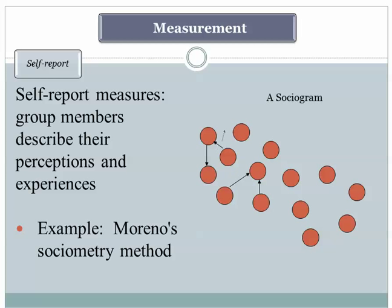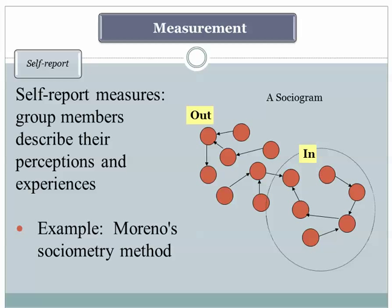Self-report measures are very simple, based on the idea that if you want to know what somebody is thinking, feeling, or experiencing, why not simply ask them and record their responses. It turns out that Whyte actually used this technique very frequently — he interviewed the members of the group and didn't simply rely on observation. Another good example is Jacob Moreno's classic use of sociometry. He was interested in understanding the interpersonal connections among group members, and he would create images of the groups he studied, which he referred to as sociograms.